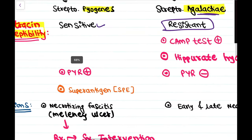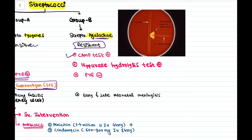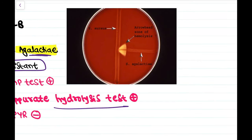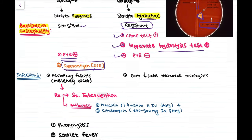Streptococcus pyogenes is PYR positive and produces superantigen called Streptococcal pyrogenic exotoxin. Streptococcus agalactiae shows CAMP positive, hippurate hydrolysis test positive, and PYR negative. In the CAMP test, Streptococcus agalactiae placed near Staphylococcus aureus causes enhanced beta hemolysis.